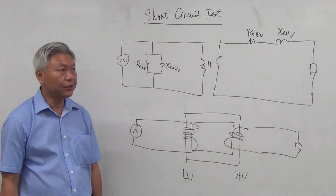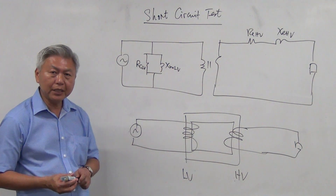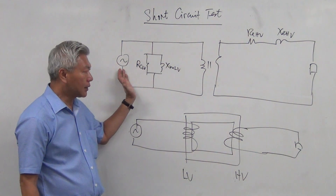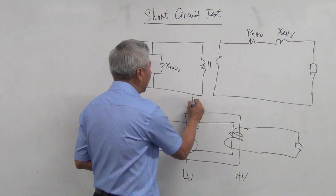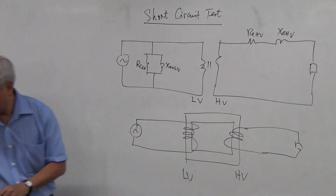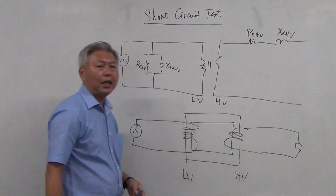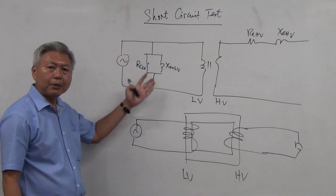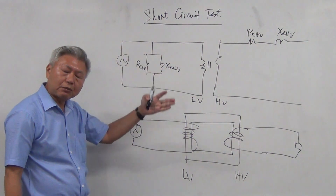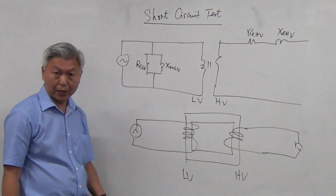We have just learned the open circuit test. The open circuit test was an experiment where we connect the power supply to the low voltage side and leave the high voltage side open circuit. We used voltmeters, ammeters, and wattmeters to measure the readings, and then went through a series of steps to get the values of RC and XM.